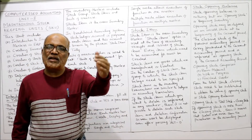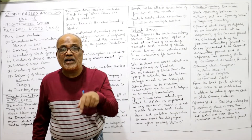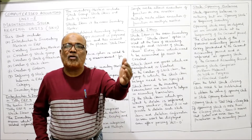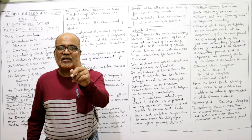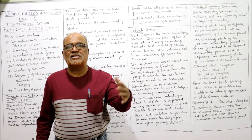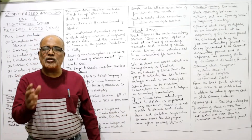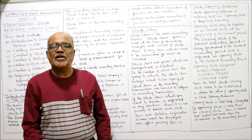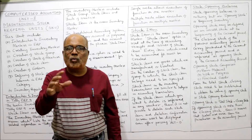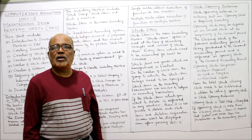Before recording the receipt or issue of a stock item, that stock item should be created. Without creating the stock item, we cannot record the receipt or issue of stock. So the first thing is you have to create the stock item, then enter the receipts or issues. Stock items are goods which are manufactured or traded by the company — those goods are called stock items.